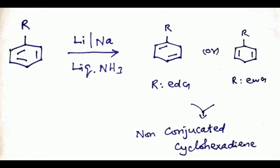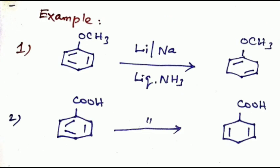For example, in the first case, methoxy group attached to the benzene ring. Methoxy group is an electron donating group, therefore it is reduced in the presence of lithium or sodium in liquid ammonia to give 1-methoxy-1,4-cyclohexadiene. Other way, COOH, the electron withdrawing group attached to the ring, gives a different product.